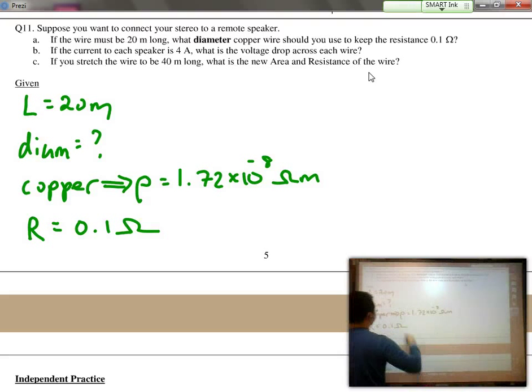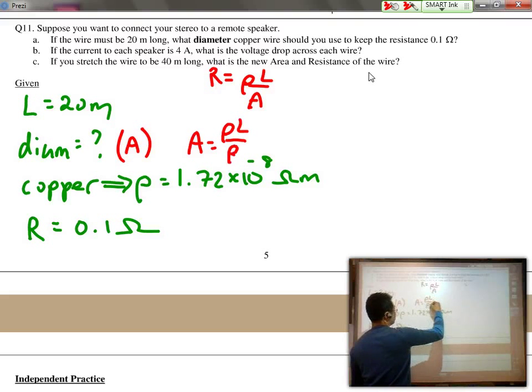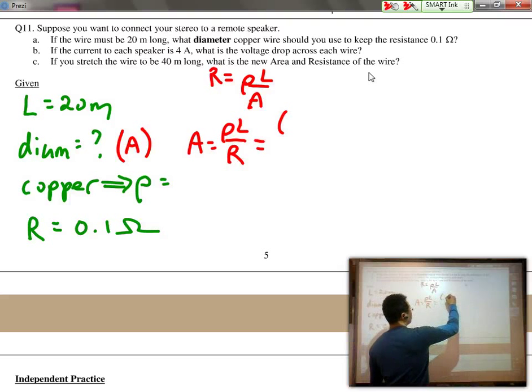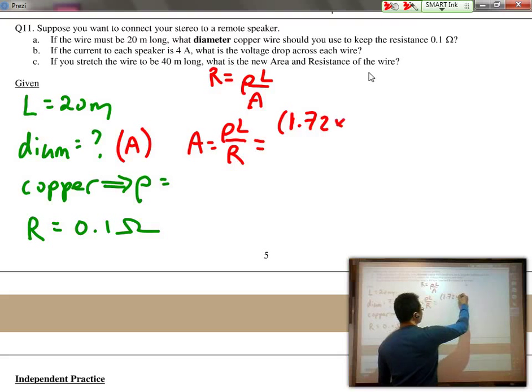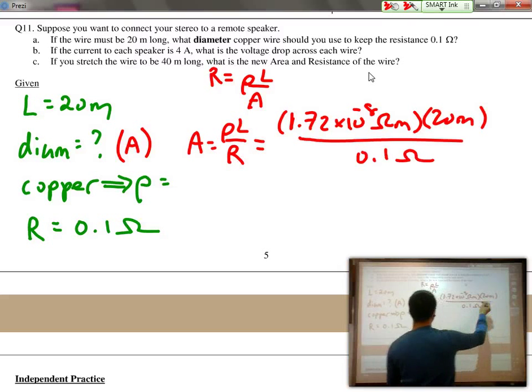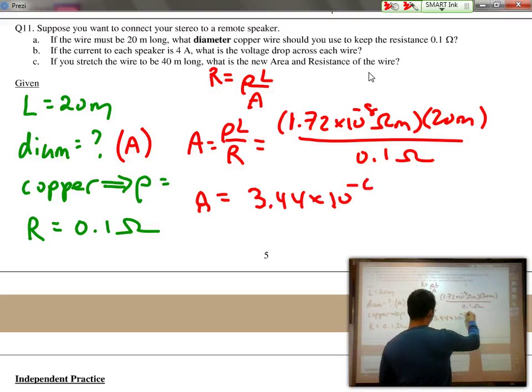They want the resistance to equal 0.1 ohms. So because we're looking for diameter, really what they're asking us to solve for is the area first. We would use the formula R equals rho L over A. In this case, if you switch it, A equals rho L over R. So if you plug in our numbers, we end up with 1.72 times 10 to the negative 8 ohm meters times 20 meters, divided by the resistance of 0.1 ohm. And we end up with an area equaling 3.44 times 10 to the negative 6 meters squared.